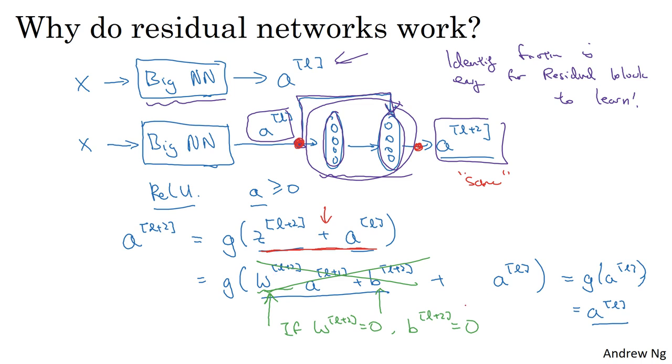In case the input and output have different dimensions. So for example, if this is 128 dimensional and therefore AL is 256 dimensional as an example, what you would do is add an extra matrix. We call that Ws over here. And Ws in this example would be a 256 by 128 dimensional matrix. So then Ws times AL becomes 256 dimensional. And this addition is now between two 256 dimensional vectors.